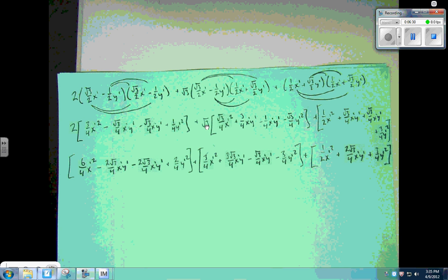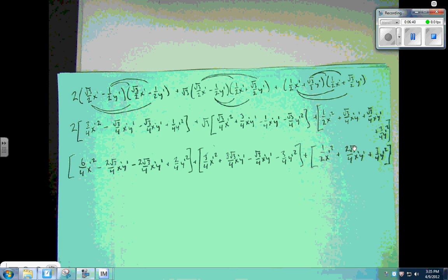This time through I distributed the two all through here. The √3 all the way through here. And I did finally collect some like terms in here. You got a √3 plus the √3. Gives you 2√3. Four's stay the same because we're adding. So now I'm going to go through and color everything that's like terms.